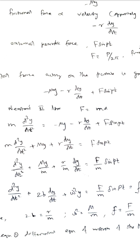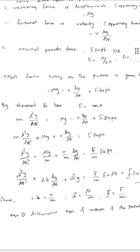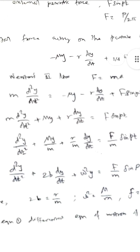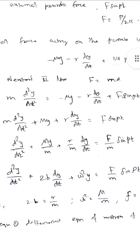We report the net force F₁ + F₂. F equals mass times acceleration, and mass times acceleration equals d²y/dt², which is the second rate of change of displacement with respect to time. So dy/dt is the velocity and d²y/dt² is the acceleration. That is equal to −μy − r(dy/dt) + F sin(pt). So m·d²y/dt² + mμy + r·dy/dt = F sin(pt).